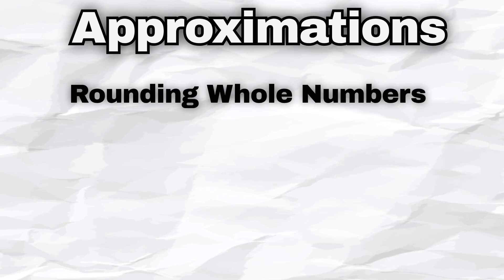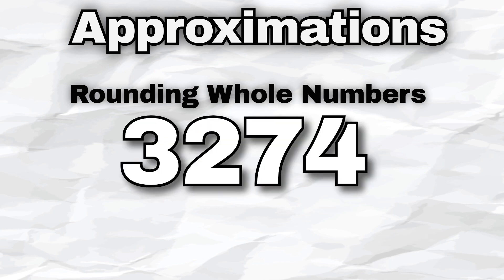One common technique in approximation is rounding whole numbers. Sometimes numbers are approximated or rounded to make them easier to work with. For example, if we have the number 3,274, we can round it to the nearest 10, nearest 100, or nearest 1,000.